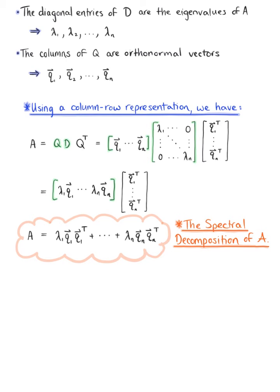We observe that each of the terms lambda sub i times vector Q sub i times the transpose of vector Q sub i is a matrix of rank 1.